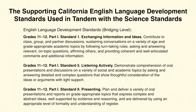The supporting California English Language Development Standards used in tandem with the Science Standards. The ELD Standards at the Bridging Level are Grades 11 and 12, Part 1, Standard 1, Exchanging Information and Ideas, where students contribute to class, group, and partner discussions, sustaining conversations on a variety of age- and grade-appropriate academic topics by following turn-taking rules, asking and answering relevant, on-topic questions, affirming others, and providing coherent and well-articulated comments and additional information.